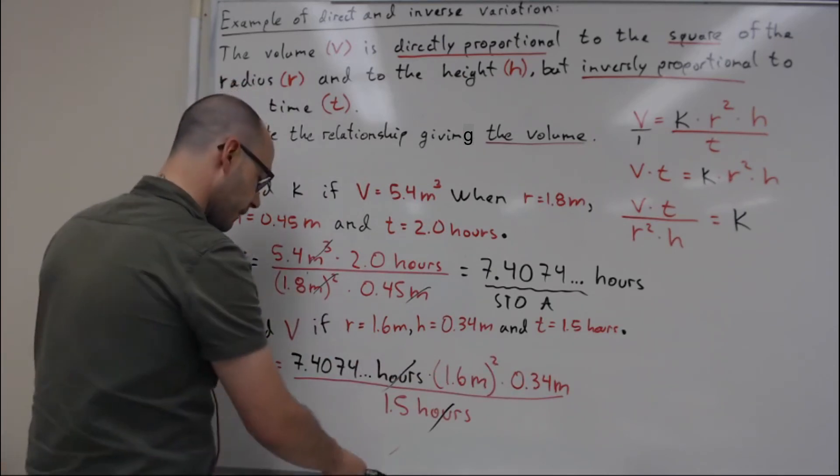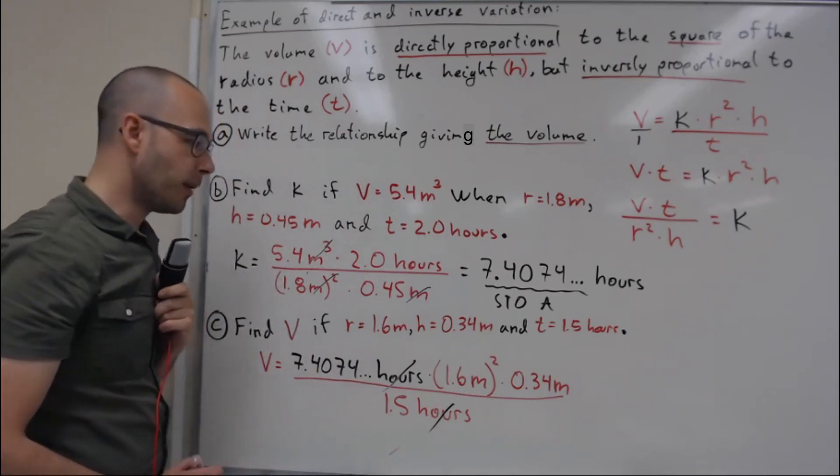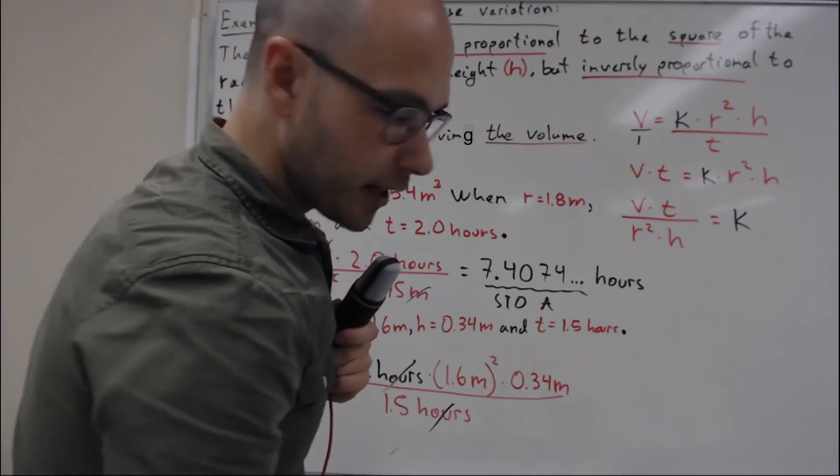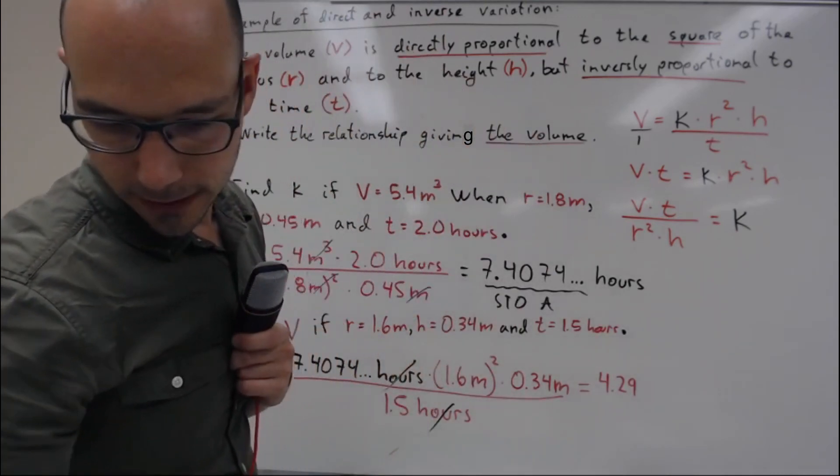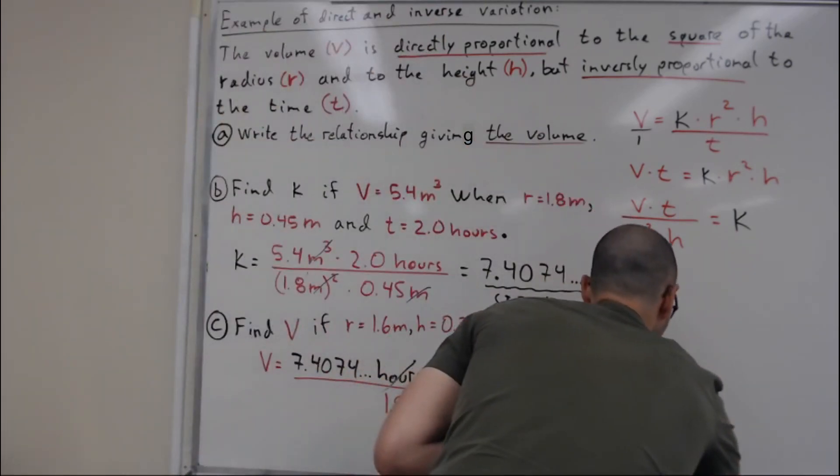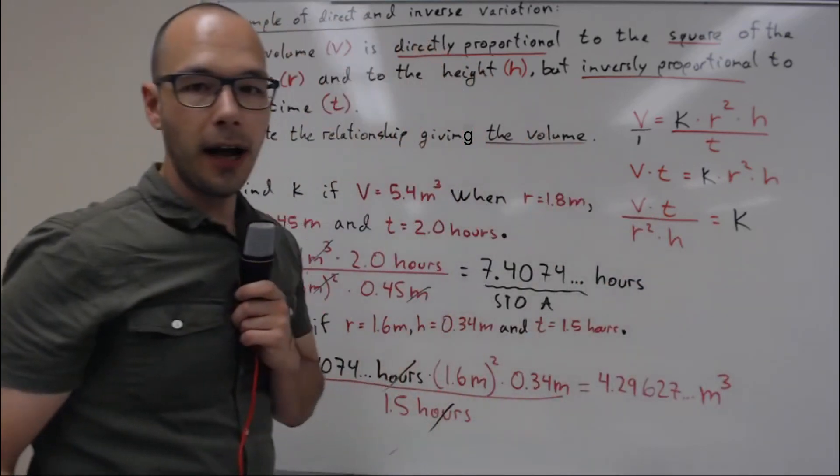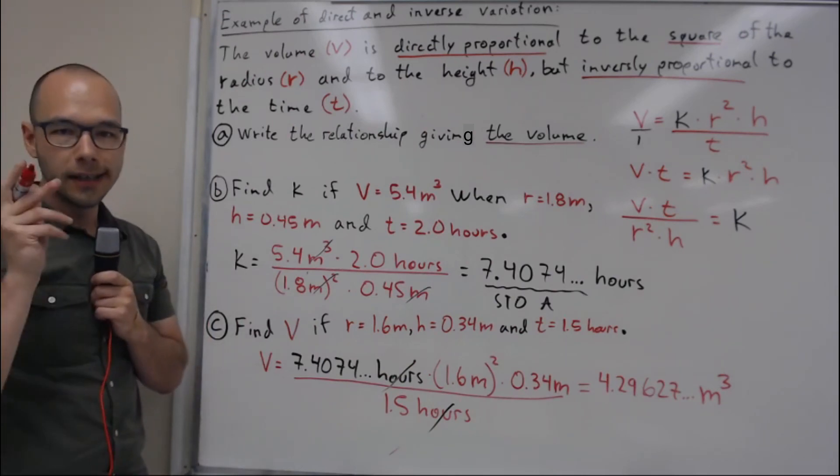So I did my calculations, I got 4.29627 dot dot dot meter cubed. And now I have to round to the correct number of sig figs because I did multiplications and divisions.